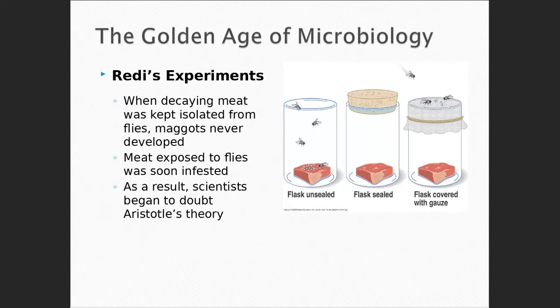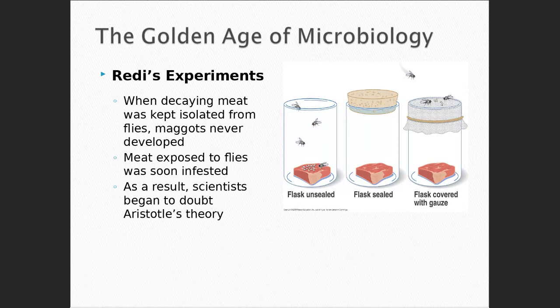One of the first individuals to challenge them was Francisco Redi. He was an Italian physician and scientist, and he did not understand why people thought that life just spontaneously generated. So he was one of the individuals who developed a little experiment to try to figure out whether spontaneous generation was true, or if there was some other reason why life developed. He took three containers and put a piece of rotting meat in each.